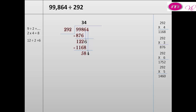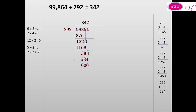We bring down 4, making 584. 584 divided by 292 — 5 divided by 2 equals 2. We try 2: 2 by 292 equals 584. We put 2 above 4. 584 minus 584 equals 0. That means 99,864 divided by 292 equals 342.